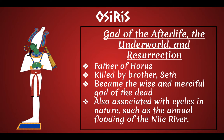Her oldest son is Osiris. He's the god of the afterlife, the underworld, and of resurrection. His son is Horus, who we'll talk about in a moment. He's going to be killed by his brother Seth, and he became the wise and merciful god of the dead after he died. He's also associated with cycles in nature, like the annual flooding of the Nile River. In the summertime, the snow melts on the mountains around Lake Victoria, floods, and all that water goes up the Nile and floods in Egypt, giving them fertile land to grow crops on. So he is associated with that — he's considered one of the good gods.